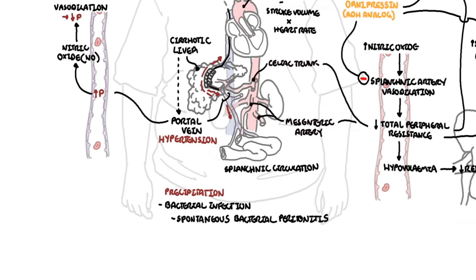Spontaneous bacterial peritonitis is an important cause because, as we know, portal hypertension causes ascites, and this ascitic fluid increases the risk of bacterial colonization.